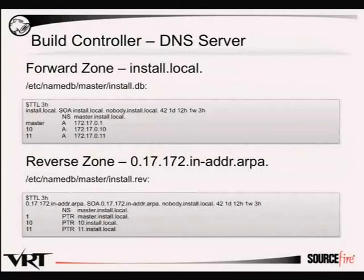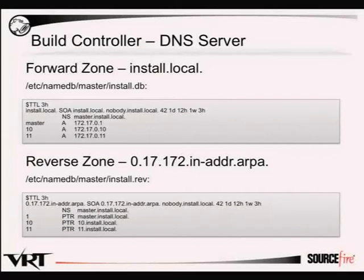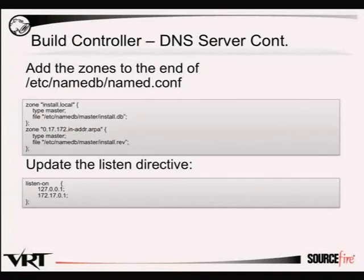We provide a small install.local DNS zone providing hostnames for both the installation controller and target VMs, with forward and reverse entries. If you're building more virtual machines, you can expand both the forward and reverse hostname sections to get more IPs. We customize named to add the two zones to the bottom of the config file and make sure it's listening on the installation segment, since by default it just listens on localhost.